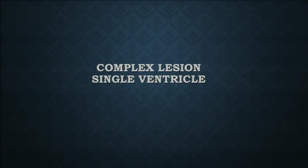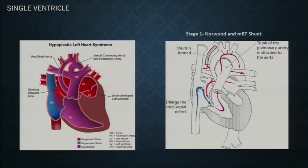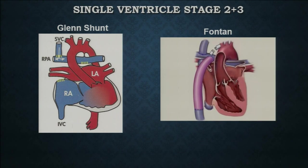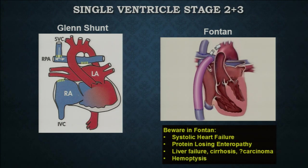The most complex lesion is the single ventricle or hypoplastic left heart, requiring three stages of palliation. Initially, patients receive a BT shunt or Norwood procedure; at stage two, a Glenn; and ultimately a Fontan. We see adult patients at the Fontan stage, where close surveillance is critical to monitor for systolic heart failure, protein-losing enteropathy, liver failure, cirrhosis, carcinoma, and hemoptysis. Adequate management is needed to prevent elevated Fontan pressures and avoid decompensation.